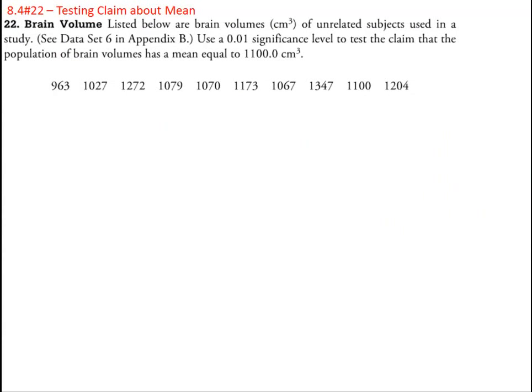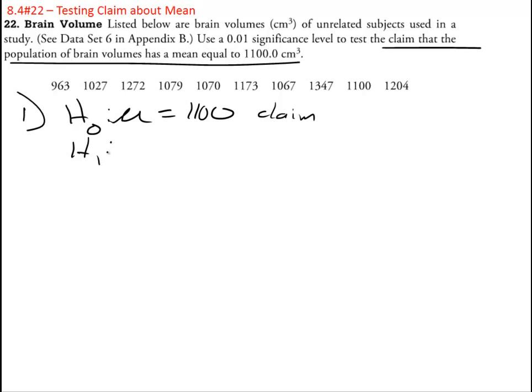Let's go through the steps just one more time. Number one, the null hypothesis. Claim that the population has a mean equal, mu is equal to 1100. That ends up being our claim. H1 is just not equal to 1100.